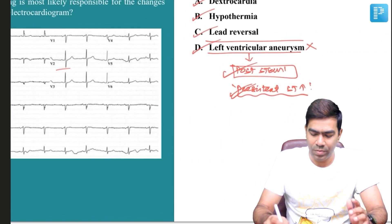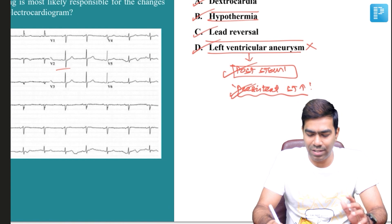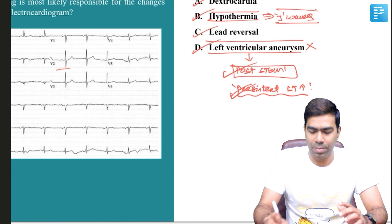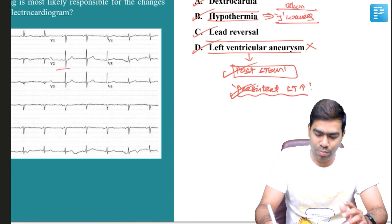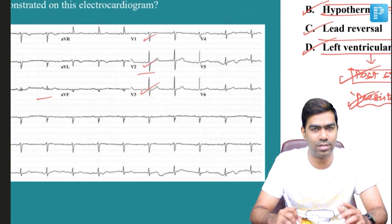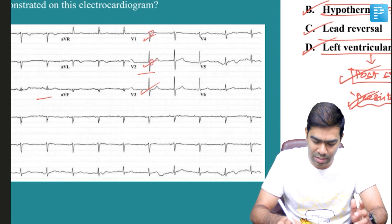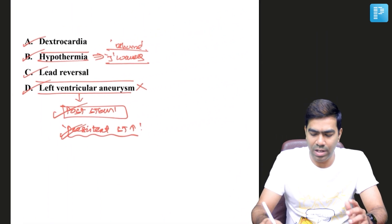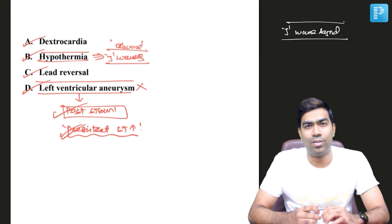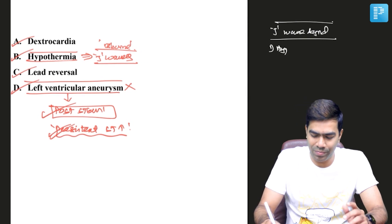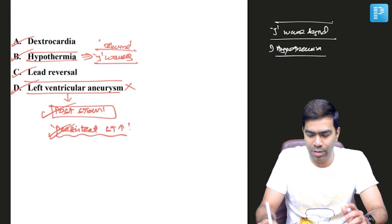Is it hypothermia? No. The characteristic feature of hypothermia is the presence of J waves, which are typically called Osborne waves. That is not the case here — J waves are usually very prominent in the early precordial leads. You are not able to see any J waves at the J point here, so that rules out hypothermia. If somebody asks about the differential diagnosis of J wave syndromes and what conditions can produce J waves: number one is hypothermia, where J waves are called Osborne waves.